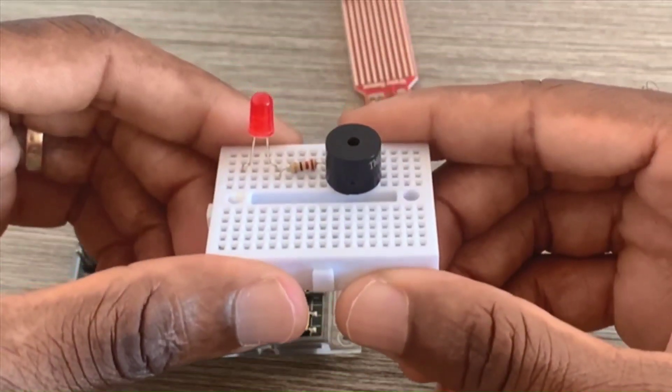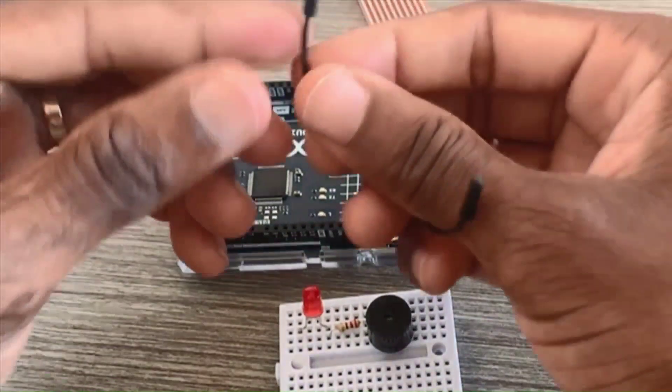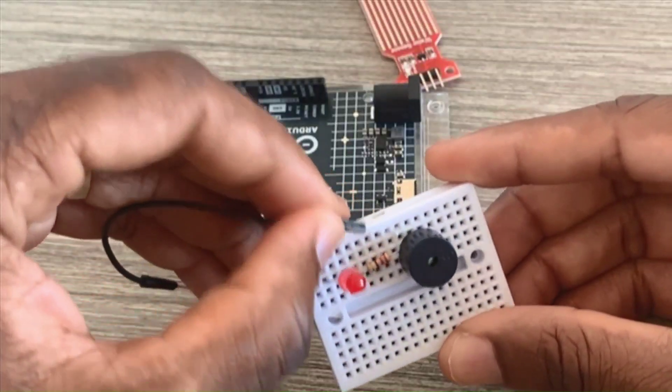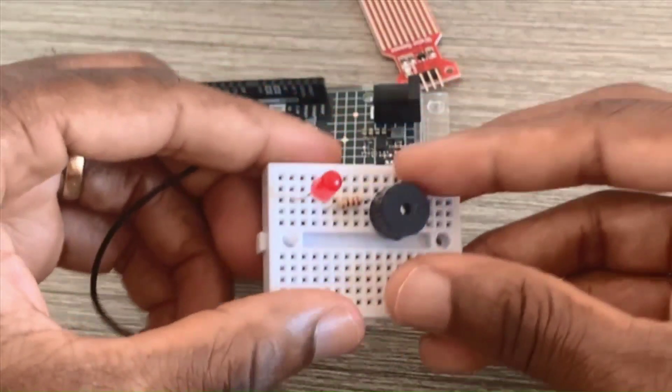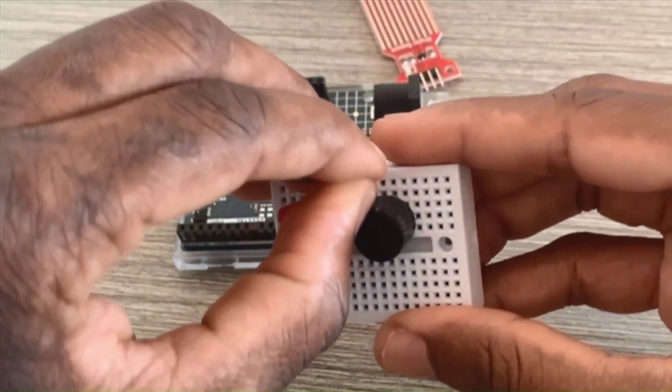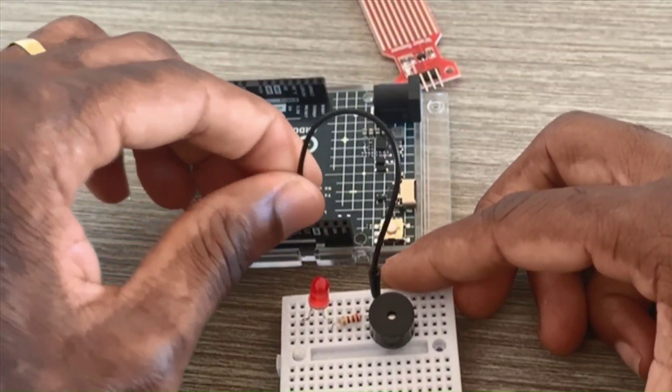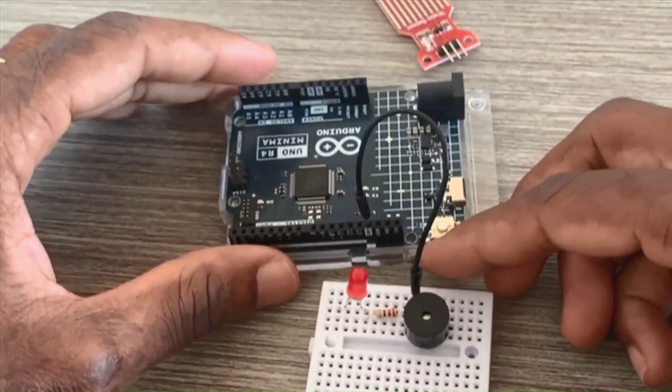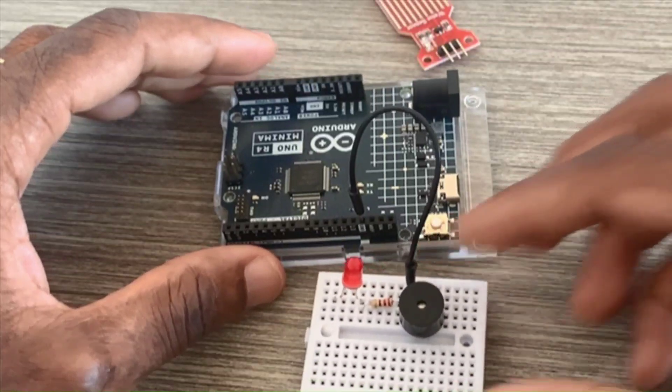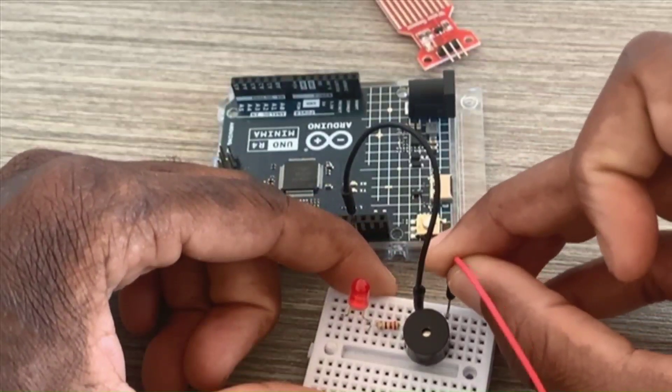The ground pin is connected to this side of the resistor. So this wire is our ground. The buzzer minus and one of the legs of the 200 ohm resistor are going to ground.